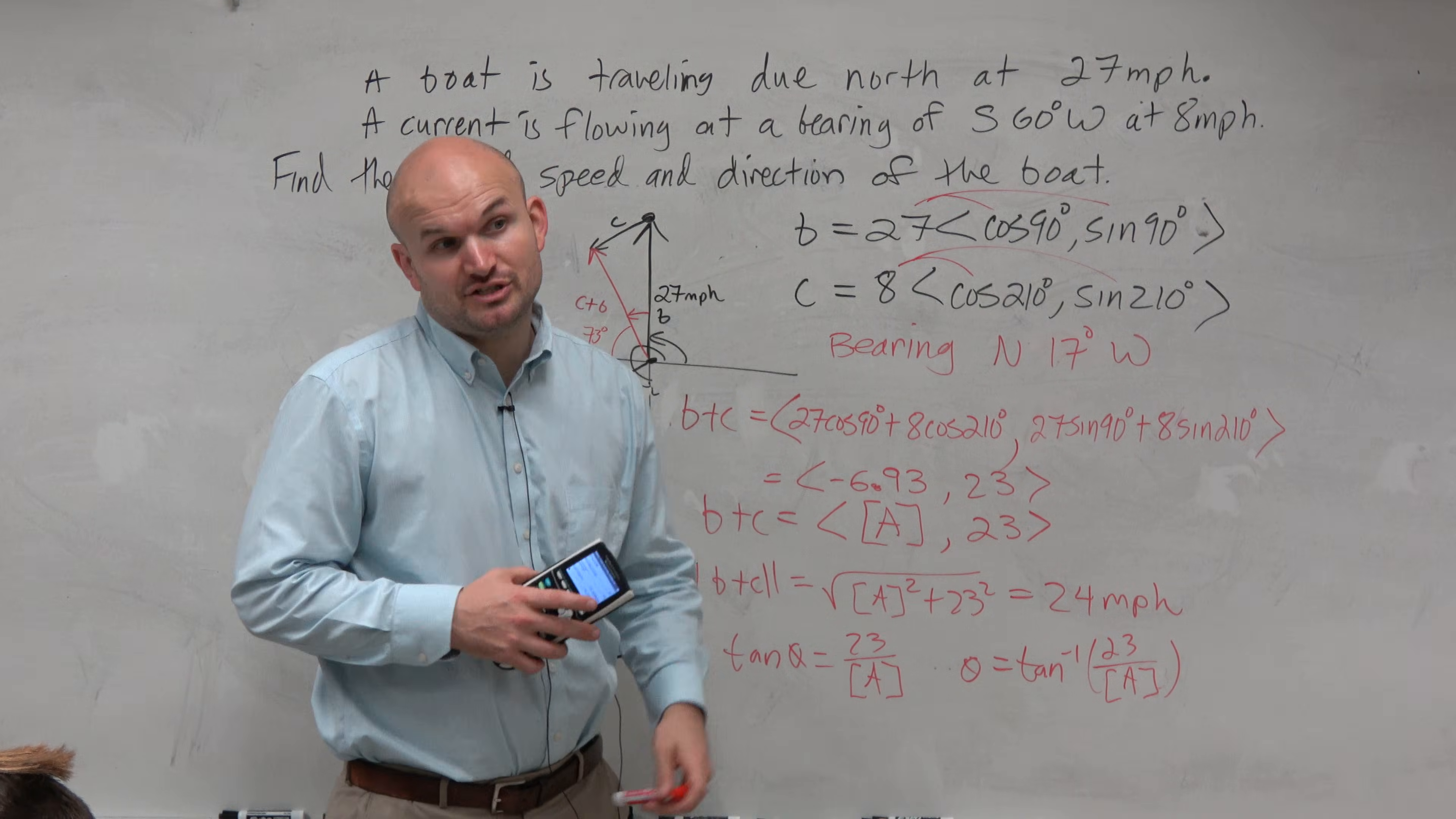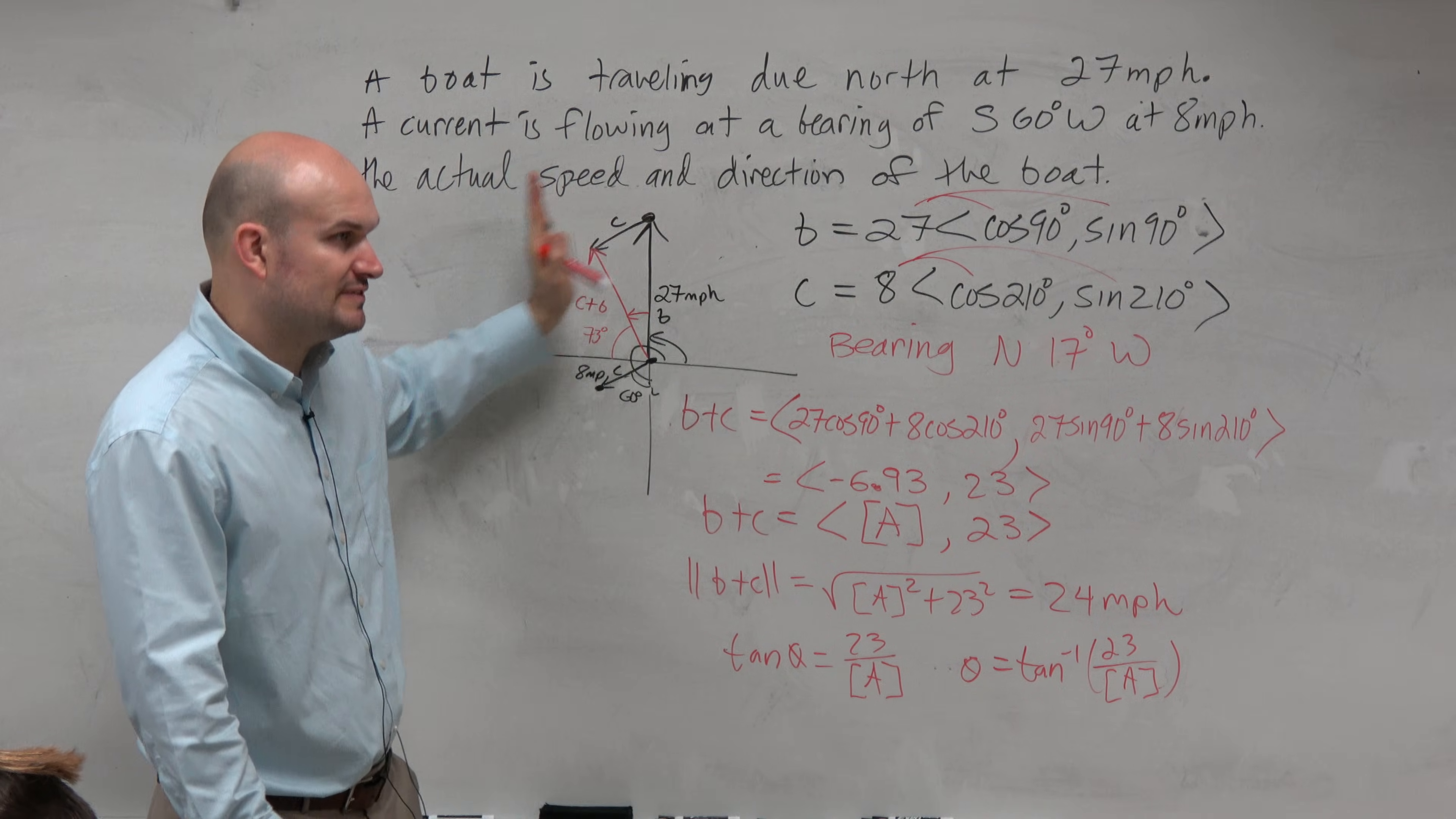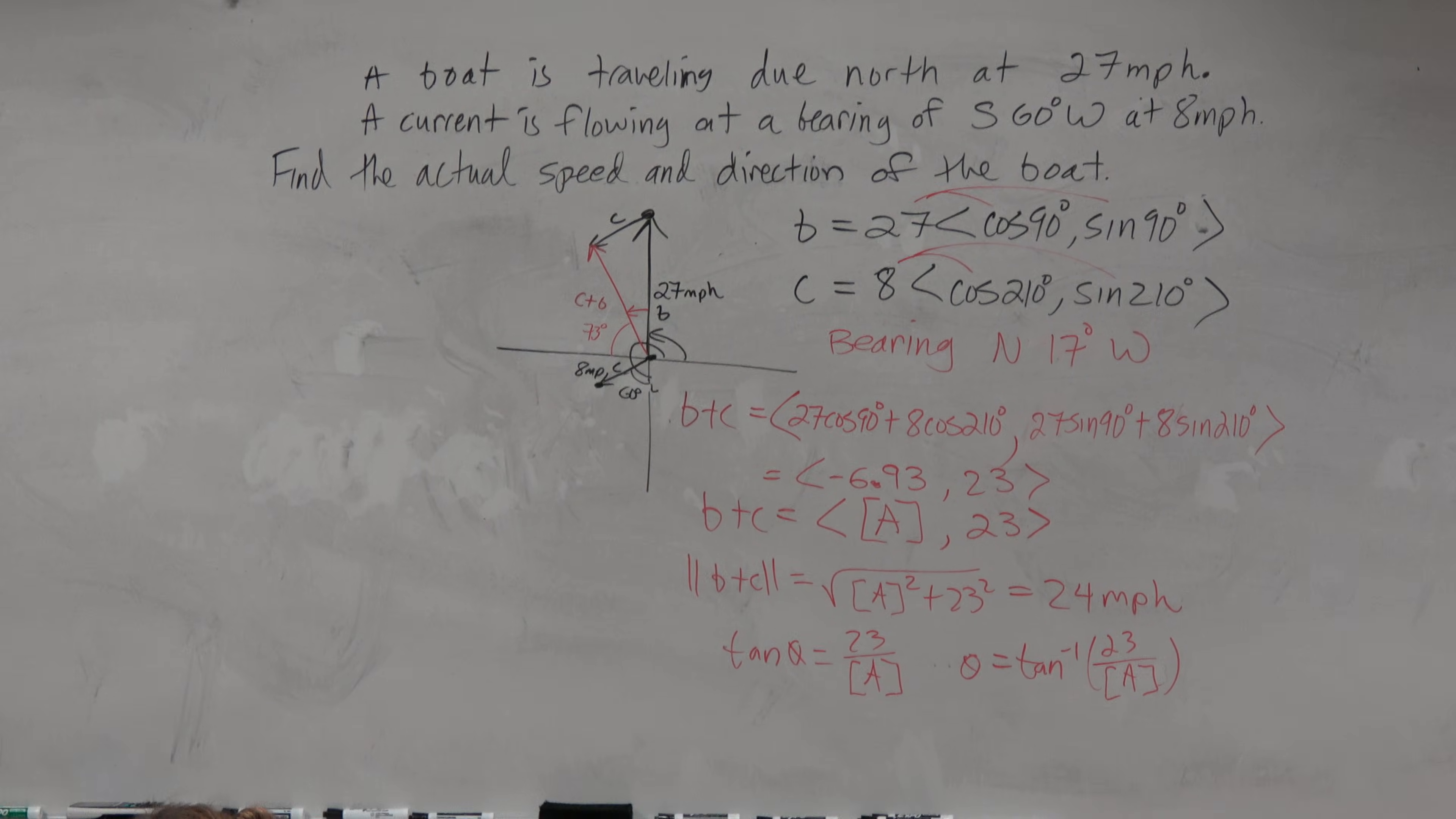So that would be your angle, and that would be your magnitude. And again, let's just make sure this makes sense. Does it make sense that the magnitude is going to be lower than what it was before the current? Yeah, it makes sense. Doesn't it make sense that my vector is being shifted over here to the left? So when you guys have a problem like this, which you will have, what you're going to want to do.